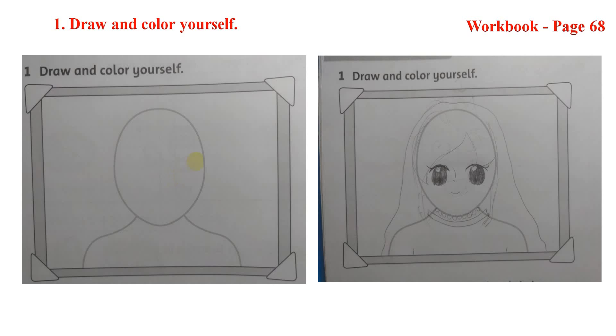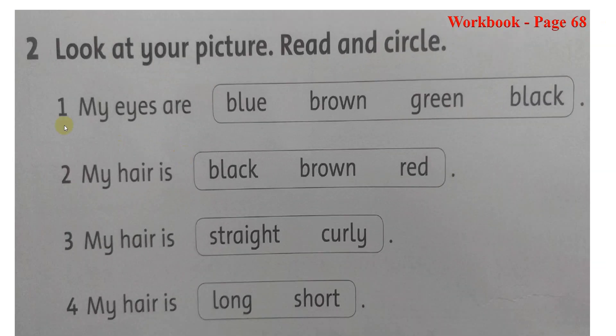Các con hoàn thành bức tranh xong, chúng ta tiếp tục làm qua phần 2. To look at your picture, read and circle. Ở phần 2 các con hãy nhìn lại vào bức tranh. Ở phần 1 mà các con vừa vẽ vào tô màu đó. Sau đó chúng ta đọc những câu hỏi và khoanh tròn đáp án đúng. Ok?